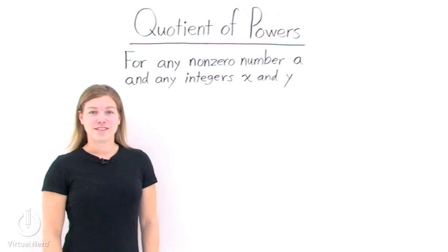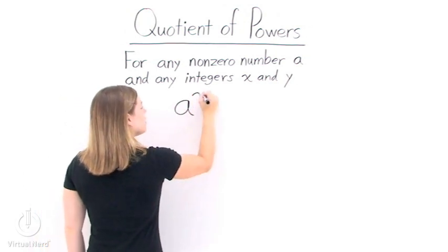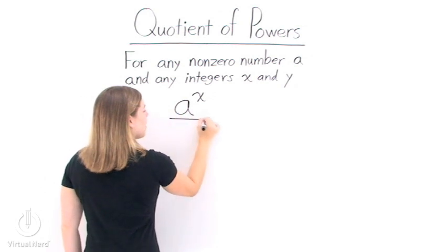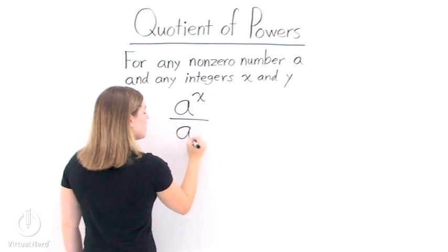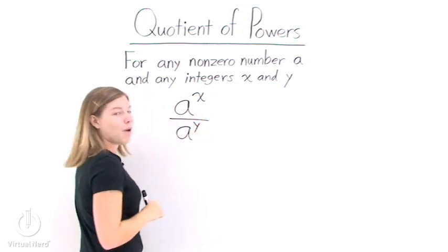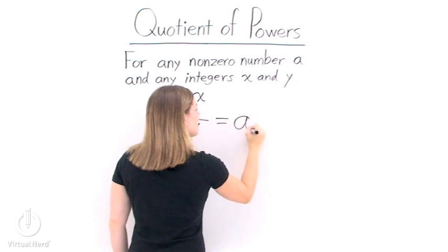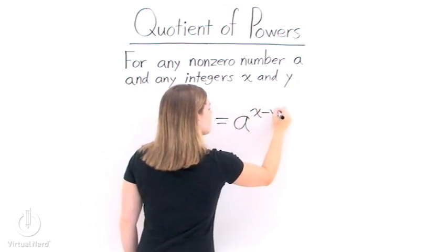Let's look at the quotient of powers. If we take any non-zero number a and raise it to an integer x power, then divide it by that same non-zero number a and raise that to the y power, then the quotient of powers says that this is the same as a to the x minus y power.